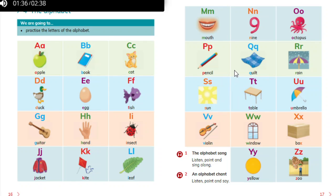Q is for quilt. R is for rain. S is for sun.